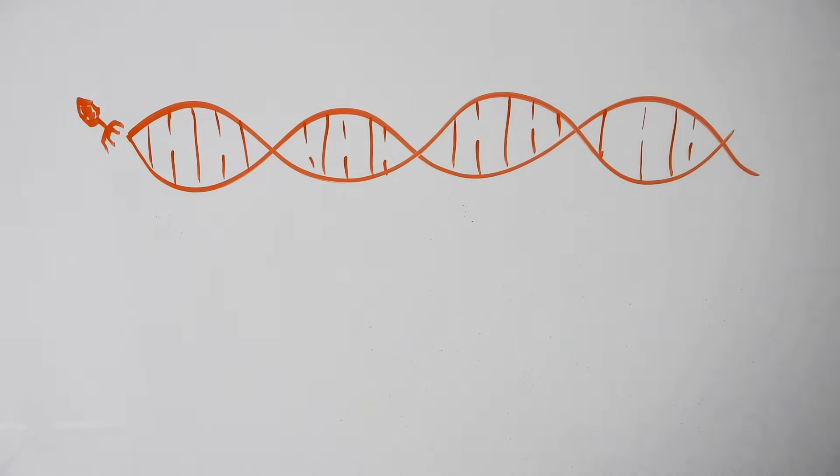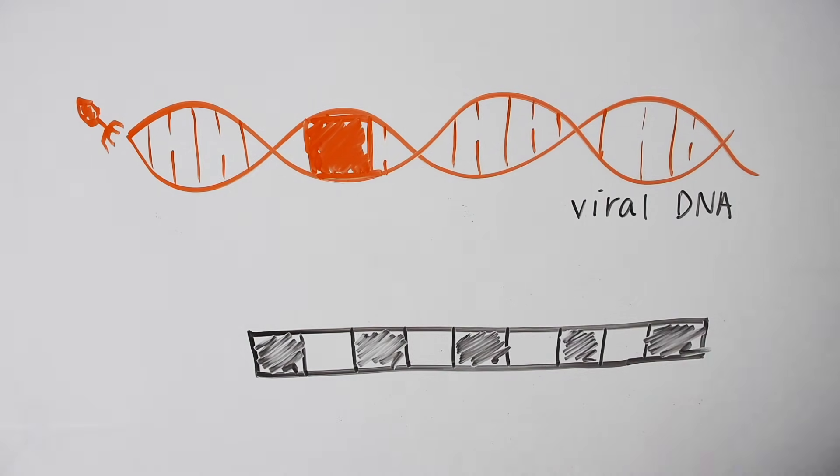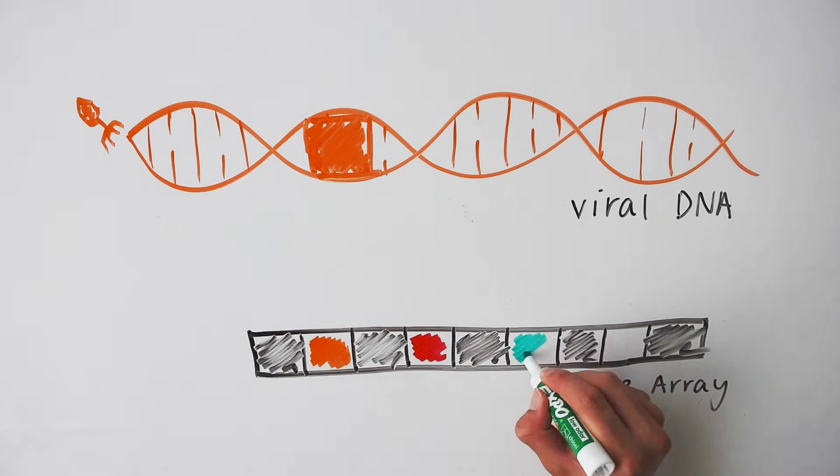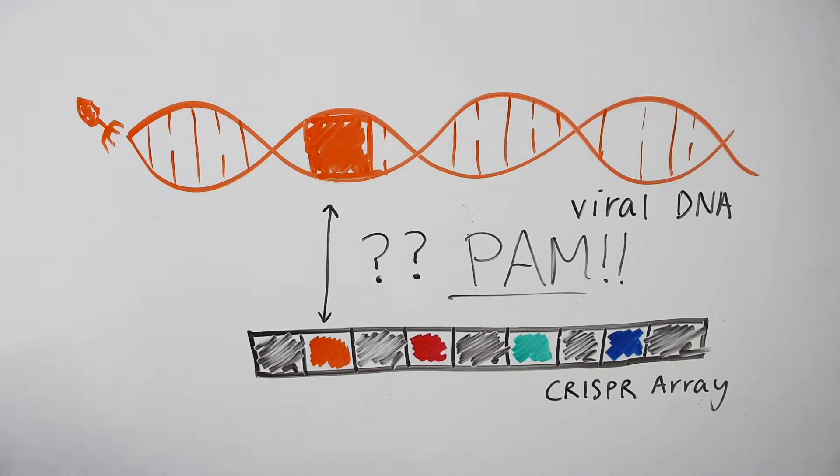But wait, the viral DNA that is targeted by the search complex is the exact same sequence as the DNA in the CRISPR array. So how exactly is Cas9 able to distinguish between itself and the enemy? This is where the PAM comes in.